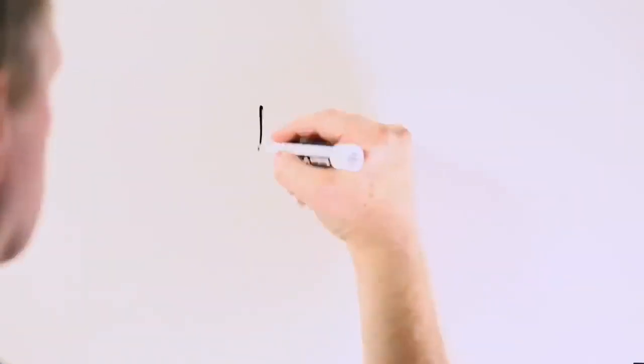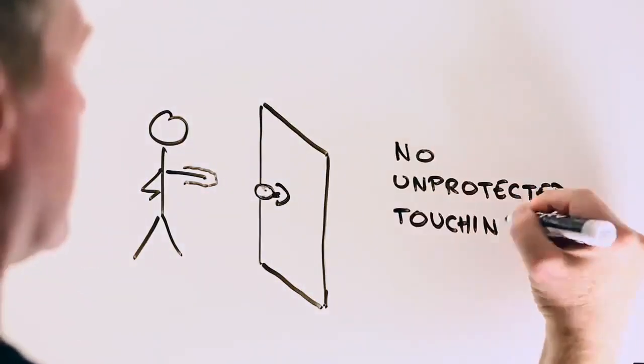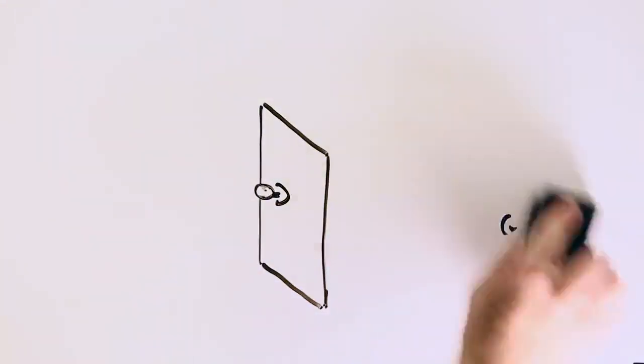Number five: Practice avoiding skin contact when opening doors or pushing elevator buttons when outside your room. This is where a sleeve or any other piece of fabric is your best friend.